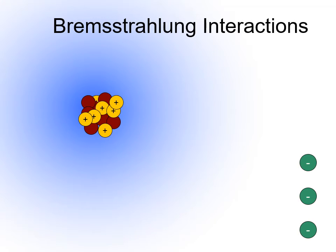To the right of the nucleus, there are three high-speed electrons. Initially, all three electrons will have the same energy.